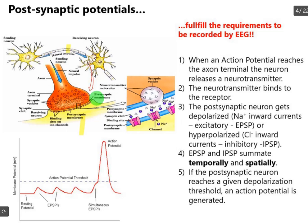In five steps: first, when the action potential reaches the axon terminal, the neuron releases neurotransmitters. Second, the neurotransmitter binds to the receptor. Then the post-synaptic neuron gets depolarized, polarized, or hyperpolarized, depending on the type of ion. If it is depolarized, we can relate it to EPSP. While if it is hyperpolarized, it will be equivalent to the inhibitory process. EPSP makes the post-synaptic membrane less negative, while IPSP makes the membrane more negative, which in turn affects the likelihood of an action potential.